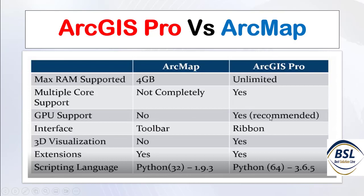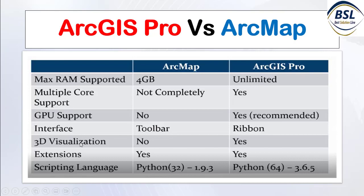Continuing the comparison: the interface in ArcMap is toolbar-based, while ArcGIS Pro uses a ribbon. 3D visualization is not built into ArcMap, but ArcGIS Pro fully supports it. Extensions are available in ArcMap. The scripting language is Python — ArcMap uses Python 2 (version 2.7.x, 32-bit), while ArcGIS Pro uses Python 3 (version 3.6.5, 64-bit).